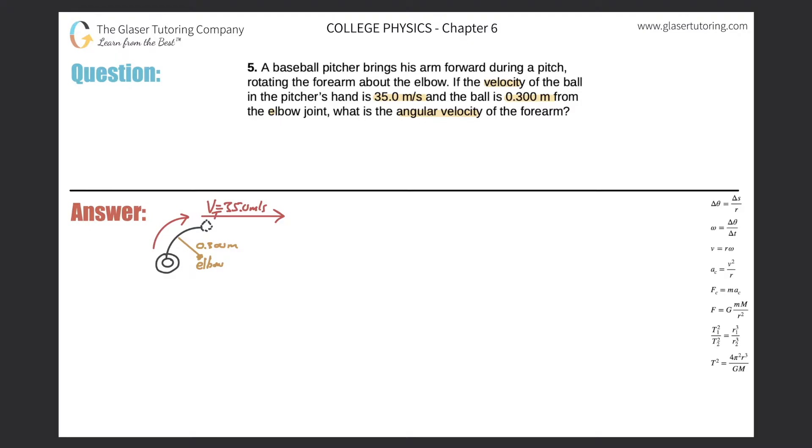All right, so here's our picture. This circle represents the ball. Pretend this line is the pitcher's forearm and the elbow joint is right here. The fulcrum of this circular motion is the elbow, so the hand holding the ball rotates about the elbow joint.